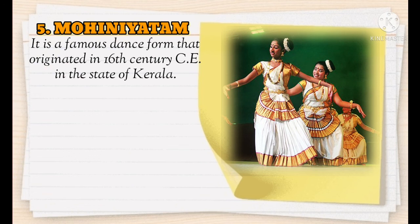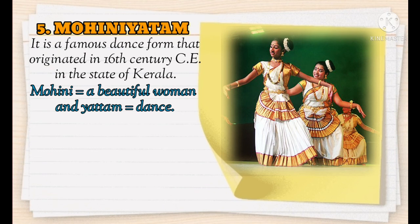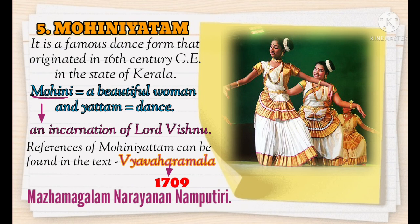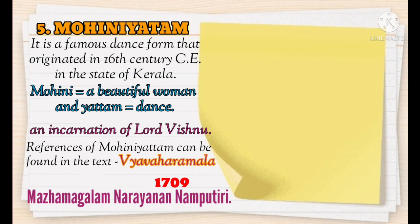Next is Mohiniattam — a famous dance form that originated in the 16th century CE in the state of Kerala. 'Mohini' means beautiful woman and 'Attam' means dance. Mohini is also an incarnation of Lord Vishnu. References to Mohiniattam can be found in the text Vyavahara Mala, written in 1709.